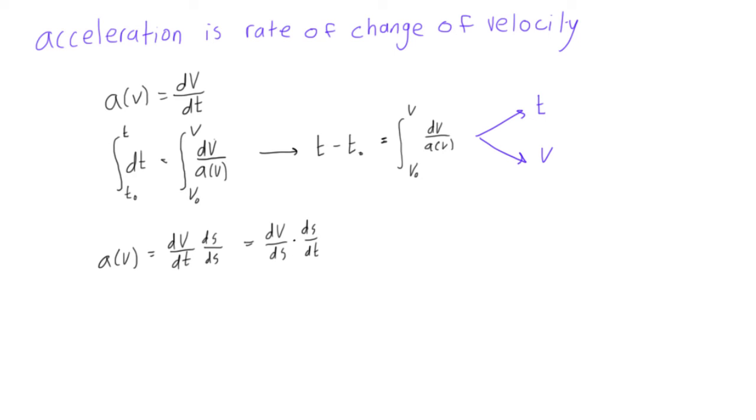But when we notice, when we look at this here, ds/dt is equal to velocity, right? This is the change in position over time. So we can also write this as acceleration of v is equal to dv/ds times v. Hope I didn't lose anyone there.